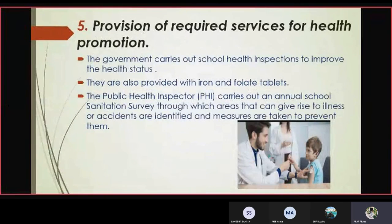Number five, provision of required services for health promotion. The government carries out school health inspections to improve the health status. They also provide iron and folate tablets. The public health inspector carries out an annual school sanitation survey to identify areas that can give rise to illness or accidents, and measures are taken to prevent them.